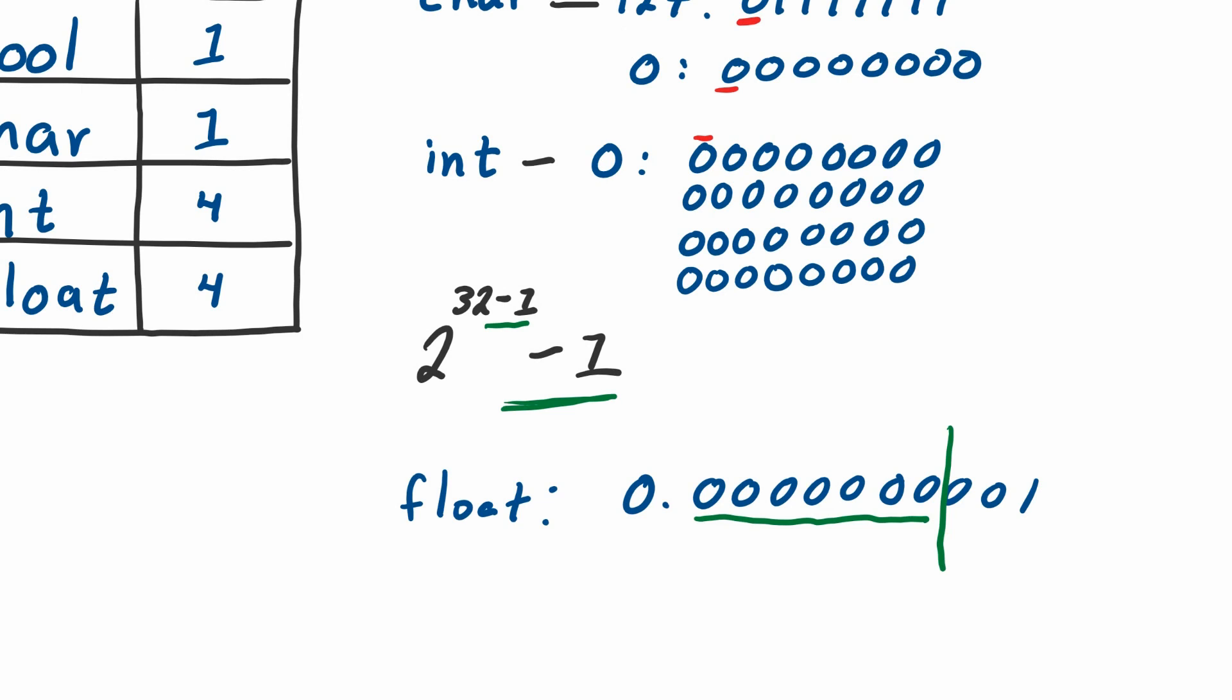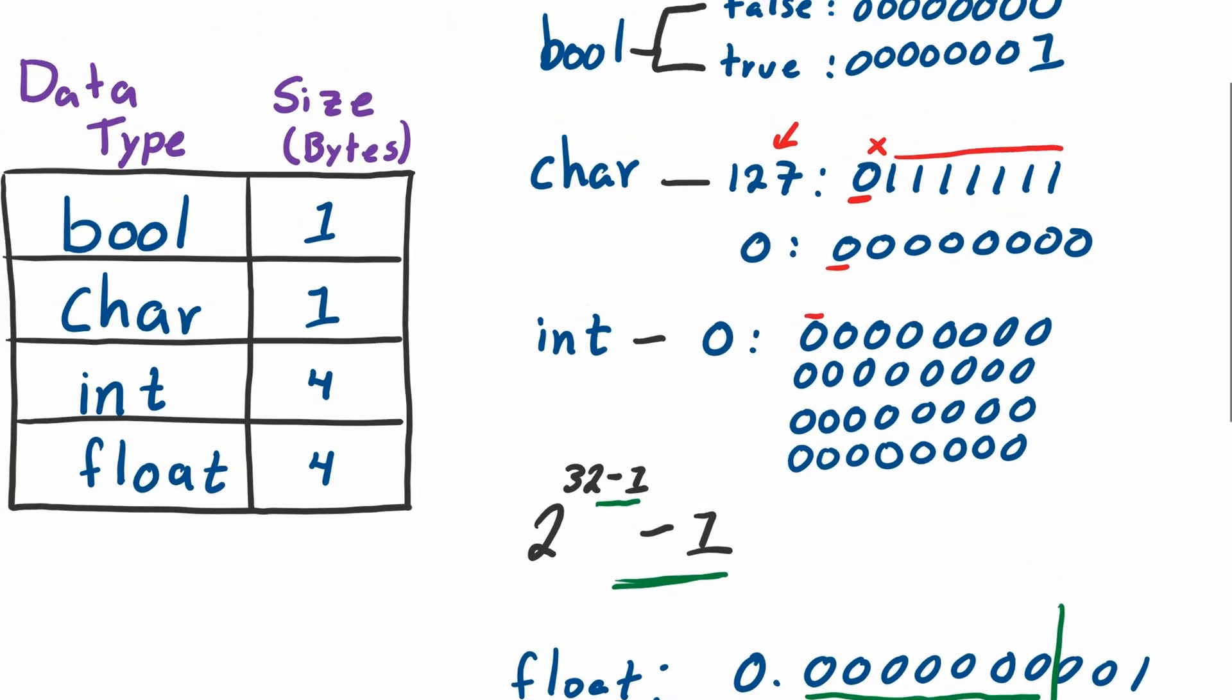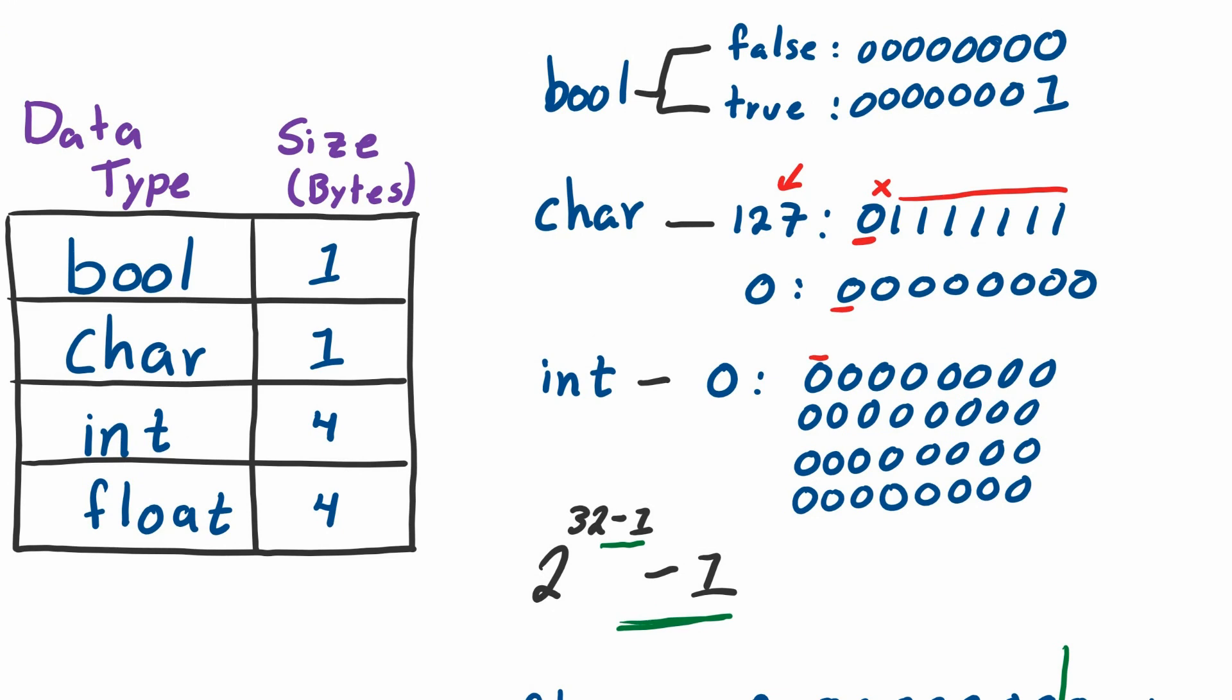What I want you to get out of this video is that all of these data types have a size in memory, and this size has a certain limitation. Booleans—they're fine, there's only two of them, no worries. Characters—there's 128 of them. We don't do more than those because that would mean we'd have to use this little bit, and we don't use that little bit because we use it for something else.